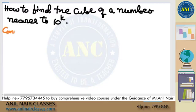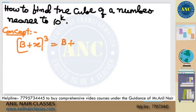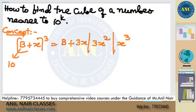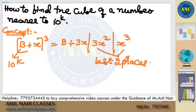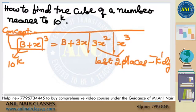First concept. B plus x whole cube is B plus 3x and 3x square and x cube. B is of the form 10 power k. Last two places has k digits.